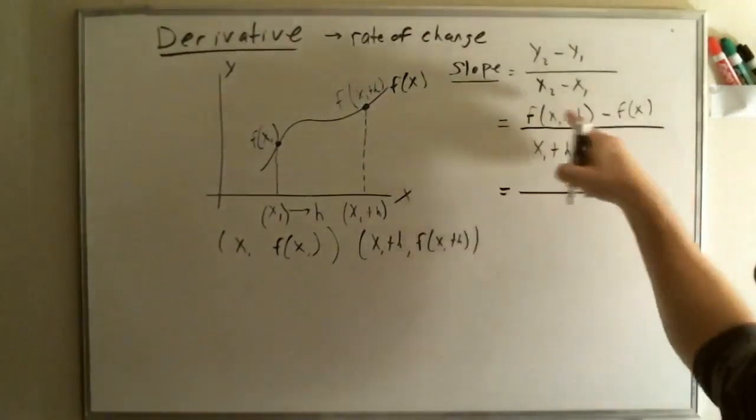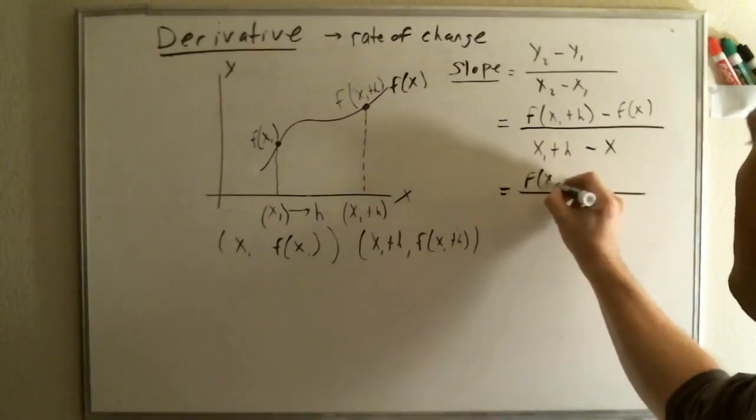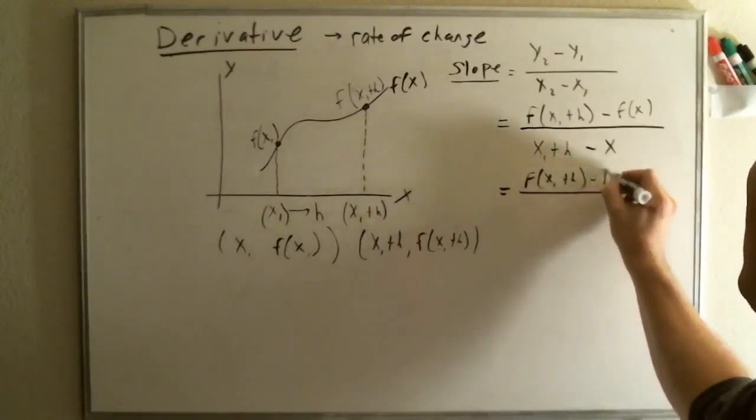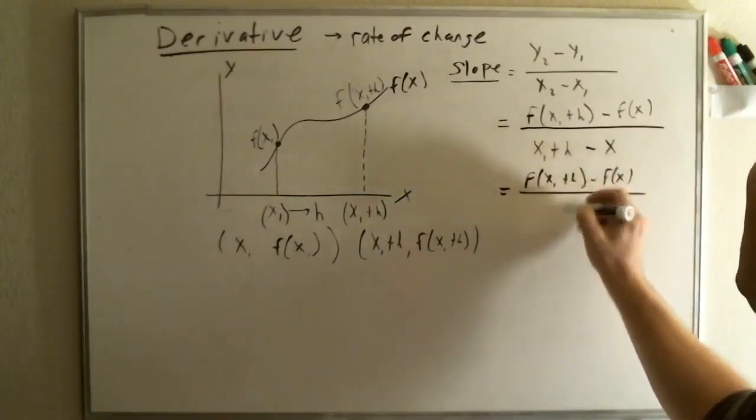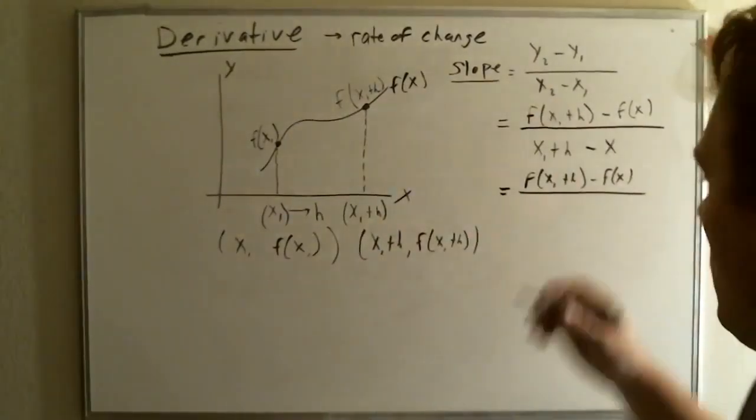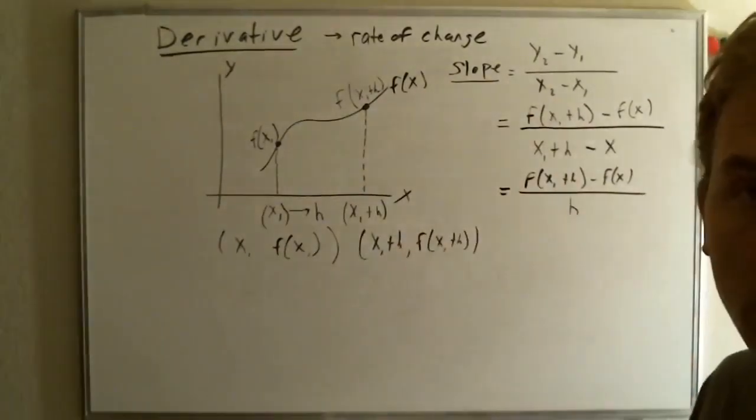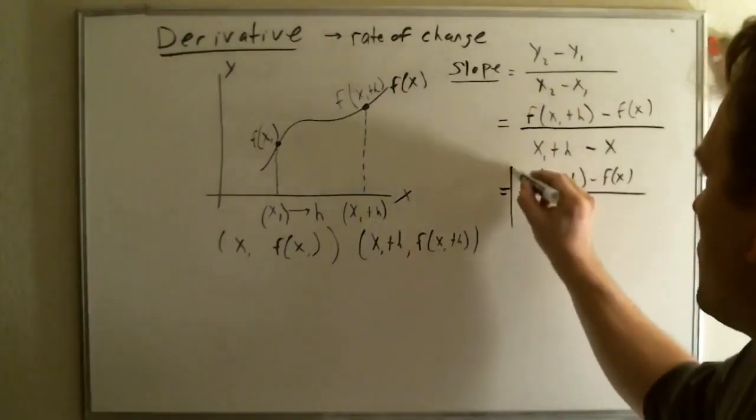So, on the top, we are just going to have f of x1 plus h minus f of x1. And on the bottom, you see how the x's cancel out, and we're just left with h. So, this is called the derivative formula.